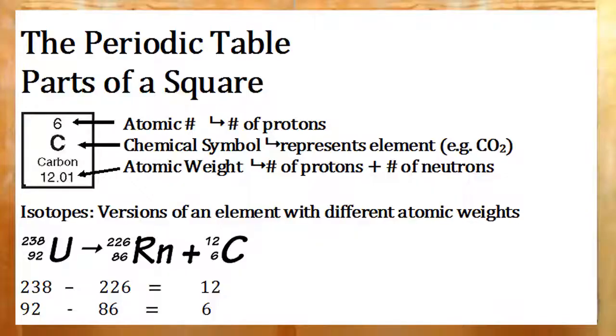To recap, there are three main parts to a square on the periodic table. Your chemical symbol, the letter or letters in the middle, which represent your element in compounds and in chemical equations. Your atomic number, which is the number of protons. That stays constant for each particular element. And lastly, the atomic weight. That's the number of protons plus the number of neutrons. It's not always a whole number because of isotopes, where elements have more or less neutrons.